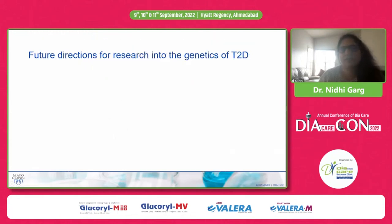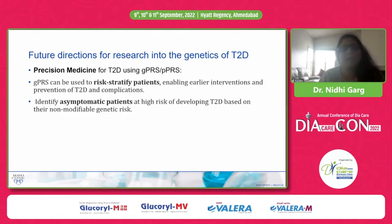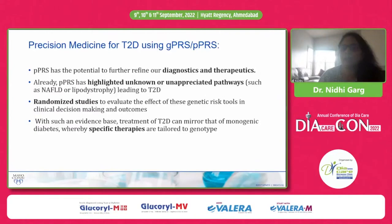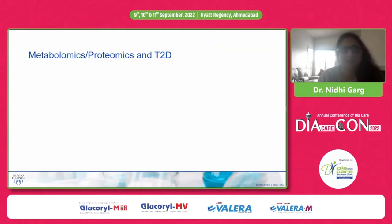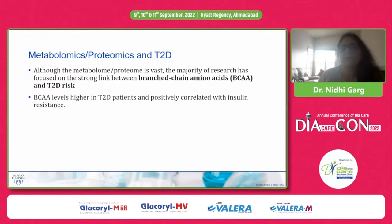The future direction for research is precision medicine. Genetic information can be used to risk-stratify patients, and can be applied to asymptomatic people at risk of developing type 2 diabetes — their genetic risk can be scored and intensive lifestyle modifications or medications can be implemented to delay disease onset. This will mirror monogenic diabetes, where specific therapies are tailored to the genotype. Regarding metabolomics and proteomics, the major research focus is branched-chain amino acids and type 2 diabetes risk — elevated branched-chain amino acids are positively correlated with insulin resistance and confer 2 to 3.5 times increased risk of type 2 diabetes.